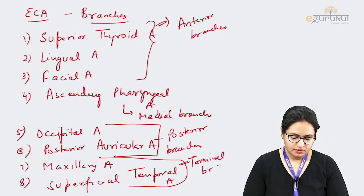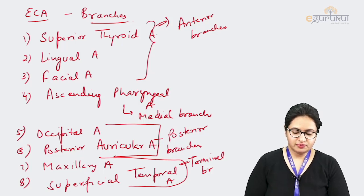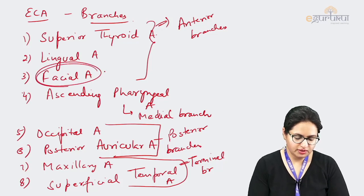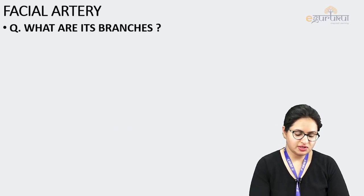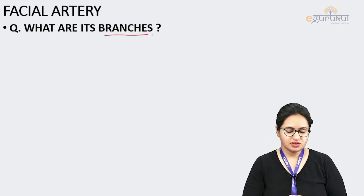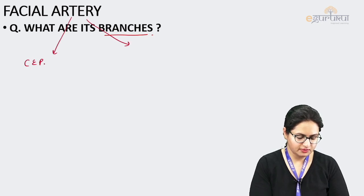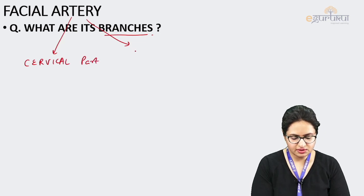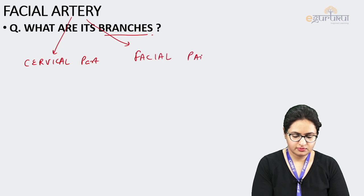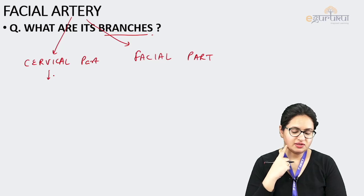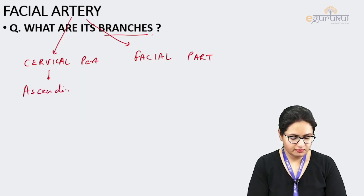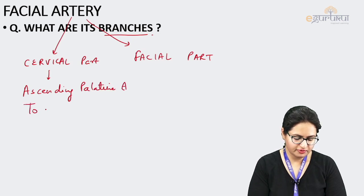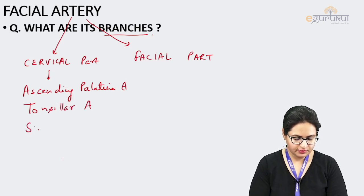In total there are eight branches of the external carotid artery, two of which are terminal. Regarding the facial artery, it has two parts: the cervical part and the facial part. In the cervical part, running in the neck and related to the submandibular gland, it gives branches including the ascending palatine artery, tonsillar artery (the main artery for the palatine tonsil), submental artery, and glandular branches.